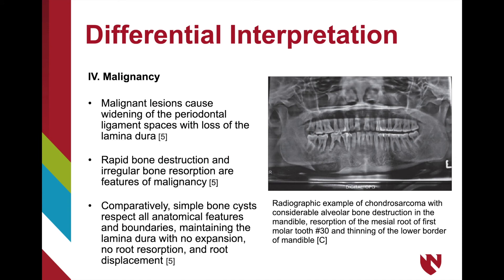The fourth differential diagnosis to consider is malignancy. Malignant lesions of the jaws, unlike simple bone cysts, cause widening of the periodontal ligament spaces and discontinuation or complete loss of the lamina dura. Additionally, rapid bone destruction and irregular bone resorption are common features of malignancy. Simple bone cysts, however, tend to respect anatomical features and boundaries, allowing the lamina dura to remain intact, not causing expansion, root resorption, or root displacement. The example shown is chondrosarcoma, with significant alveolar bone destruction, root resorption, and thinning of the lower border of the mandible all noted.